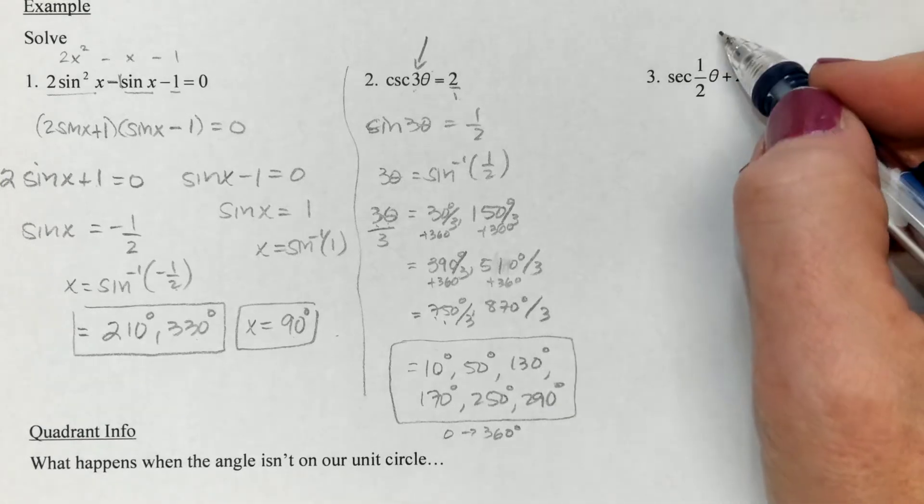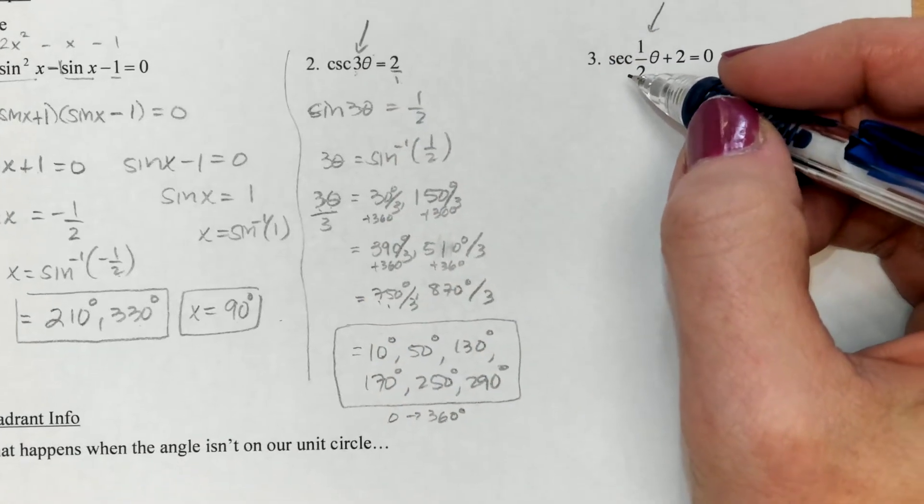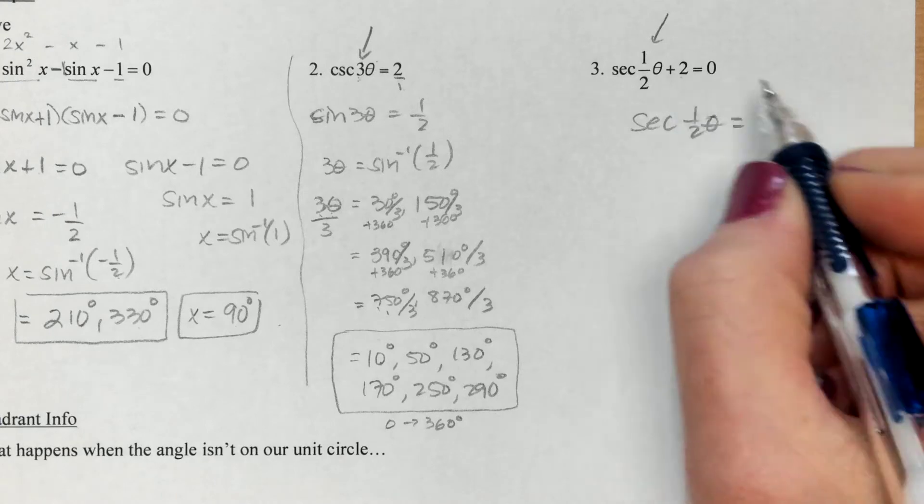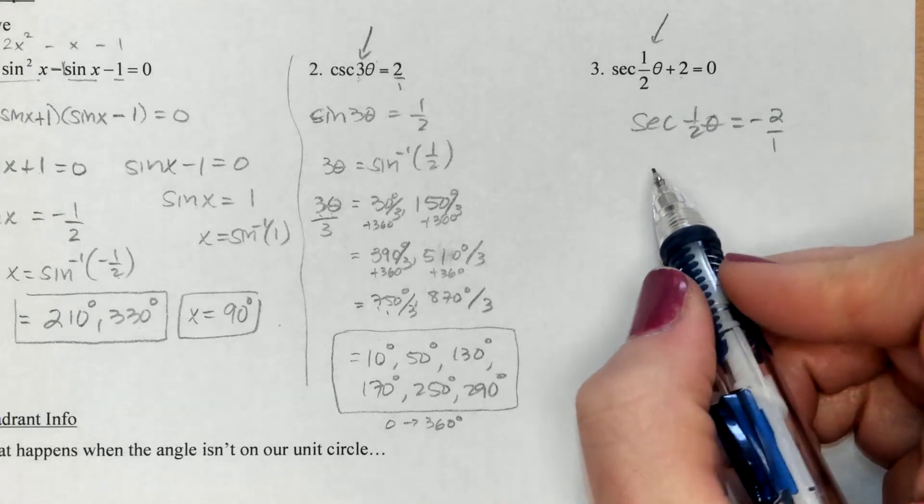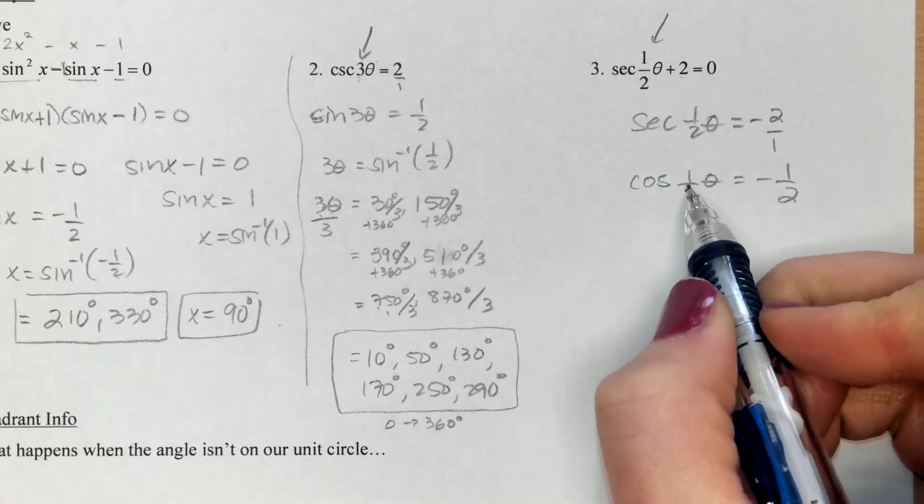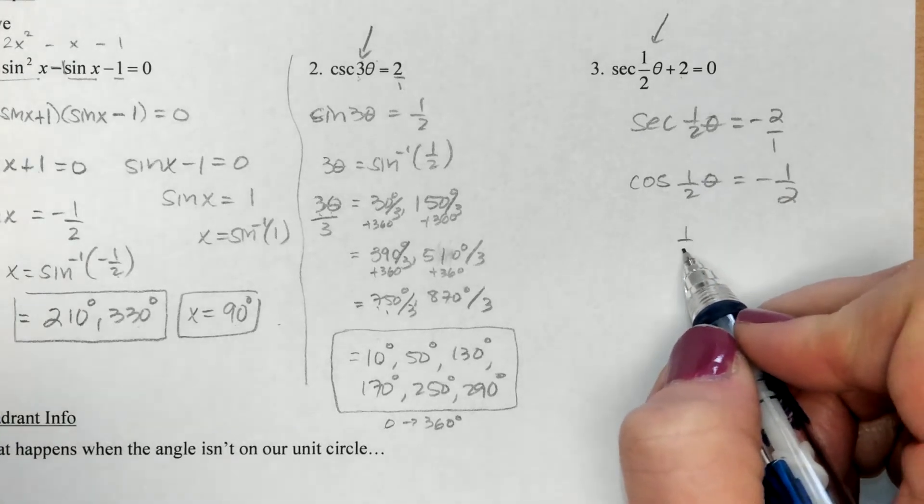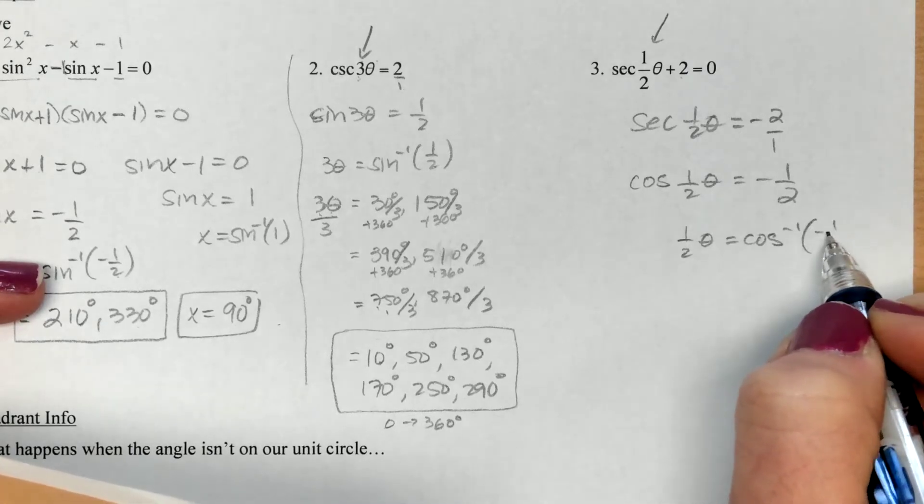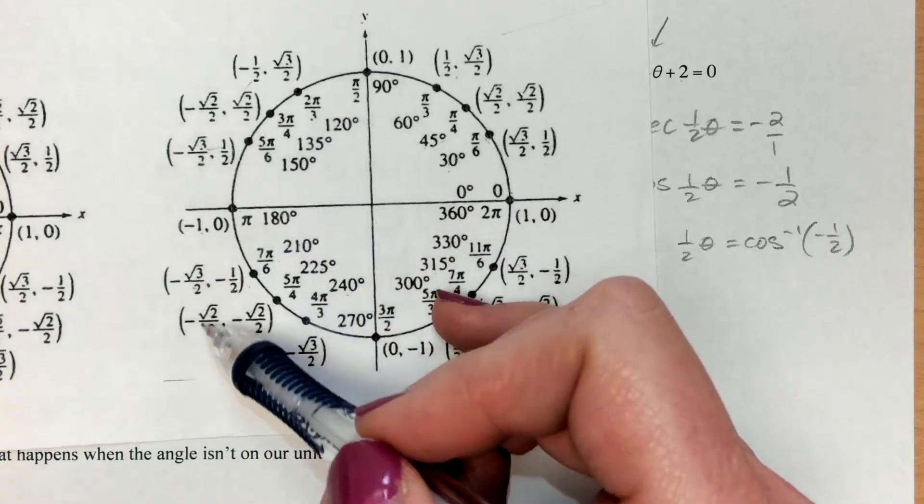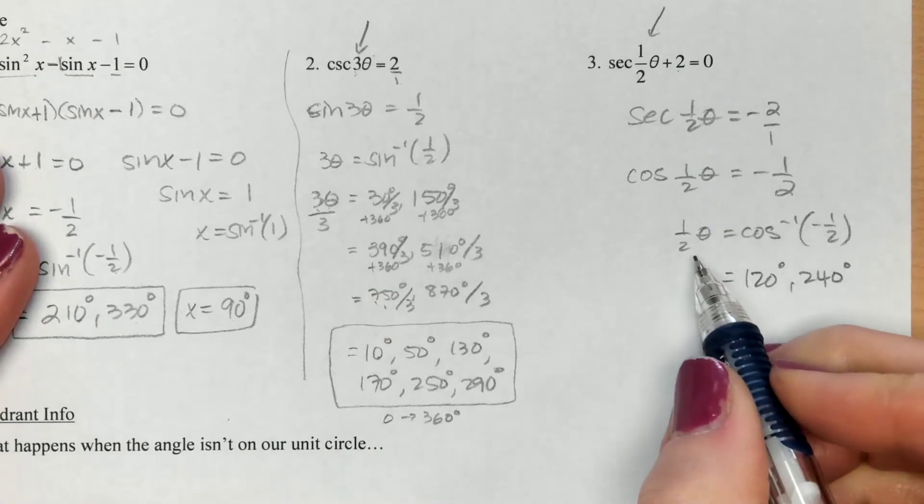Next up, we've got a half. If a three meant three times as many answers, a half should probably mean about half as many answers. If normally we get two answers, we probably will only have one here. I've got secant of θ/2 equals negative two over one. I don't have any secants on my circle, so I'm going to flip that to a cosine. The only thing that flips is the value and the trig, not the angle. We're looking for where the cosine is negative half. That happens right here at 120 and here at 240.